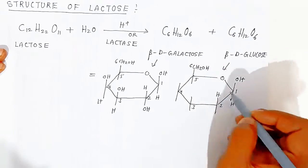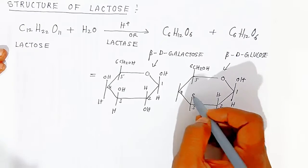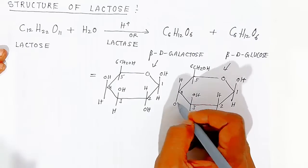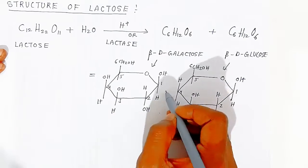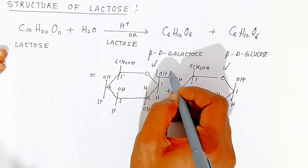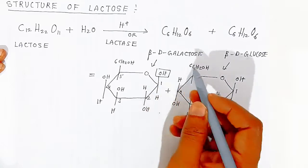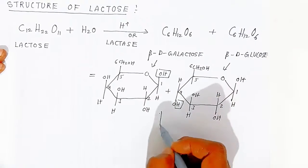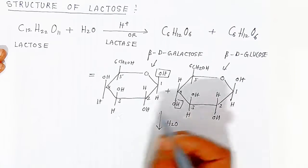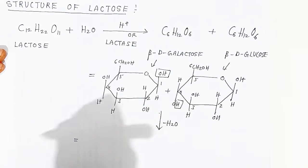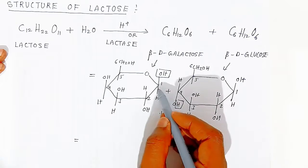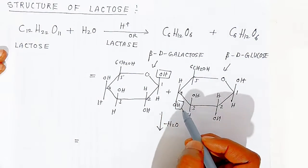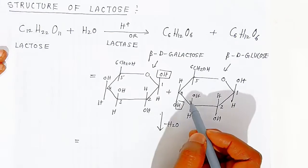Fill all valencies with hydrogen and hydroxyl. The hydroxyl of beta-D-galactose reacts with the hydrogen of beta-D-glucose, eliminating water. They condense to form a glycosidic bond where carbon 1 combines with carbon 4. This is called a beta-1,4 glycosidic linkage.